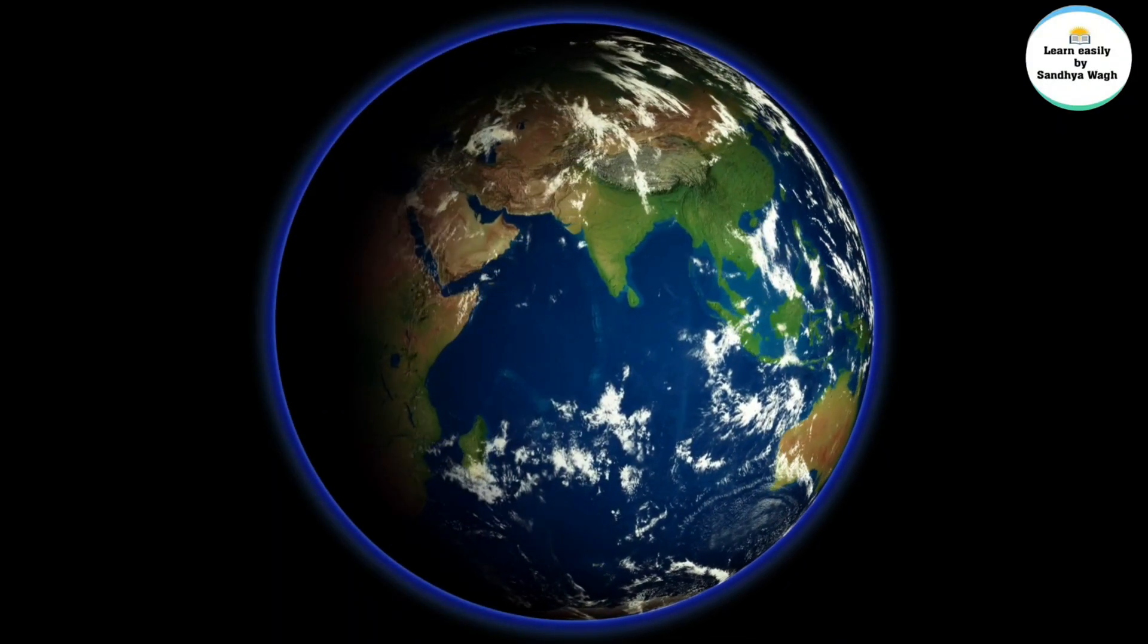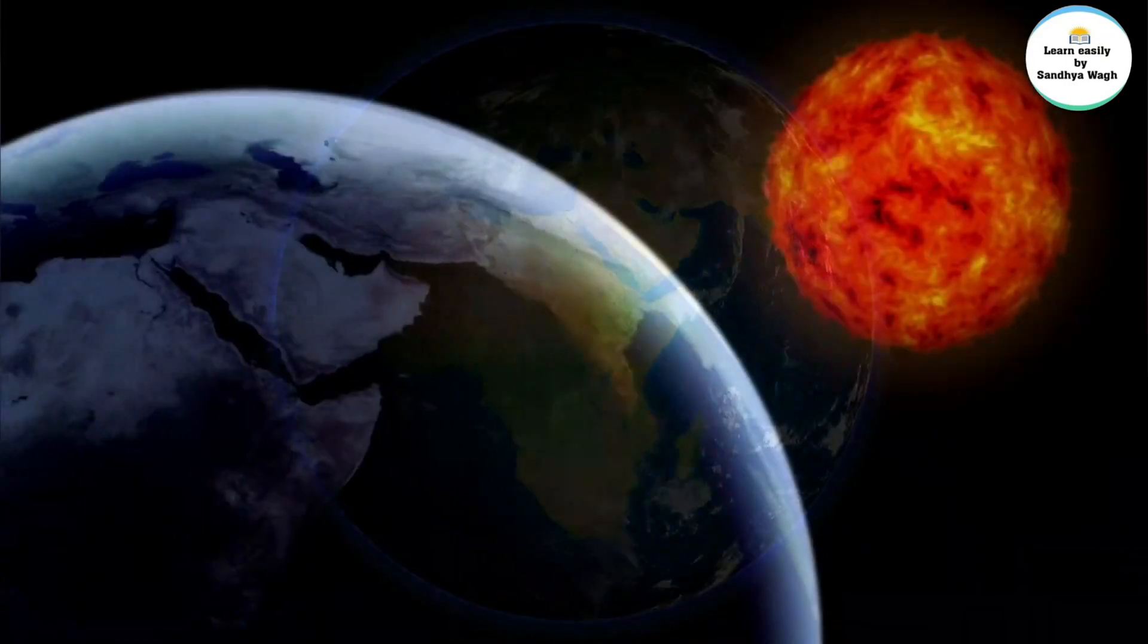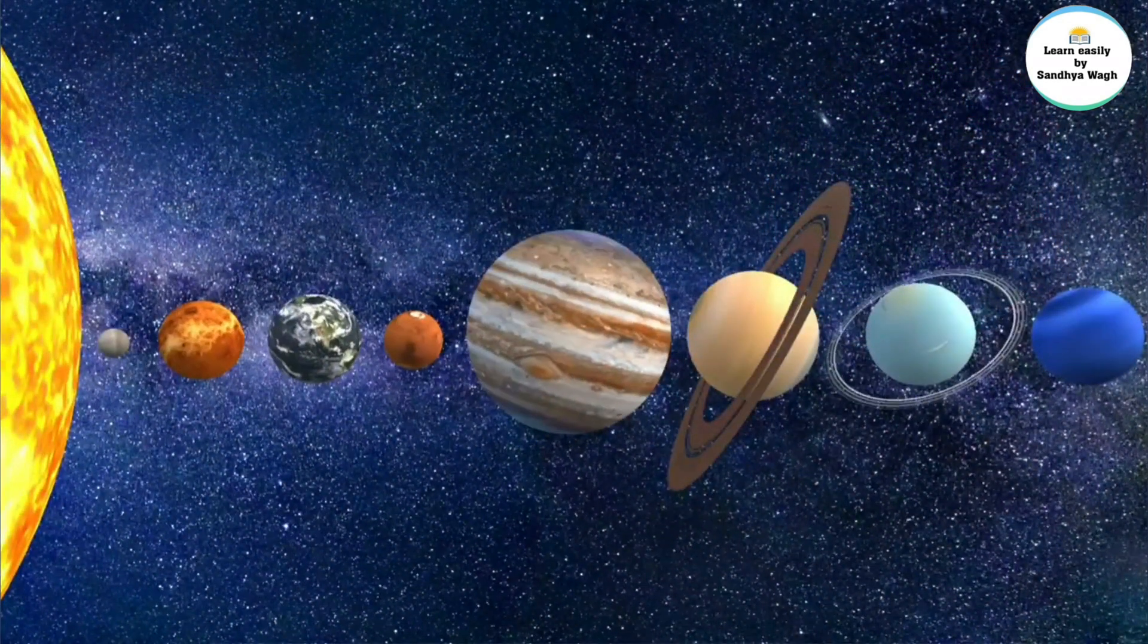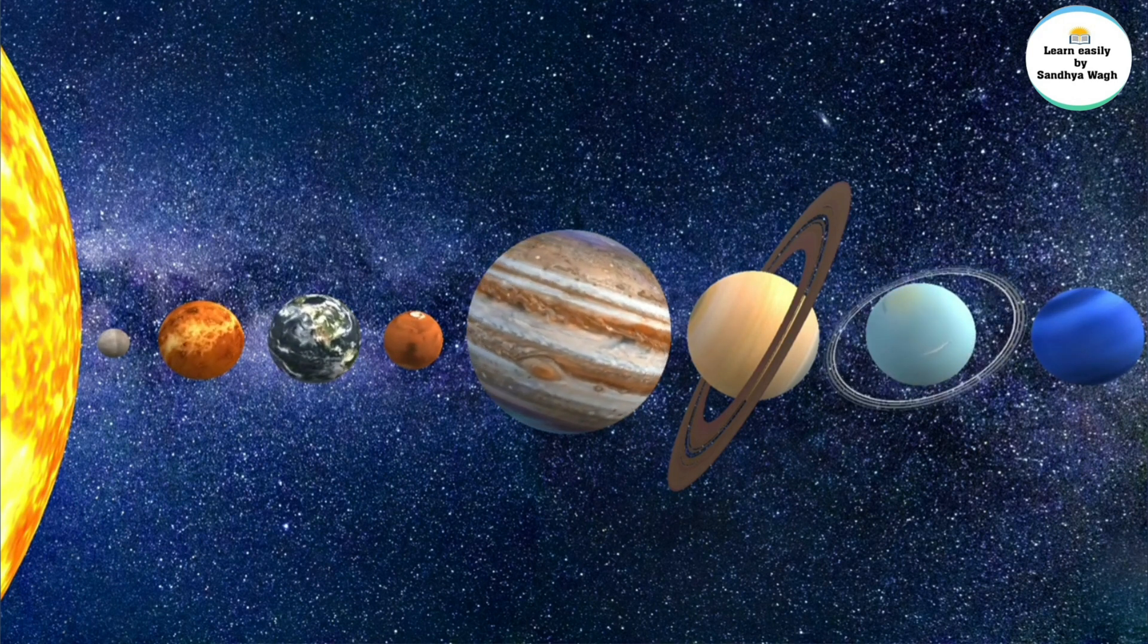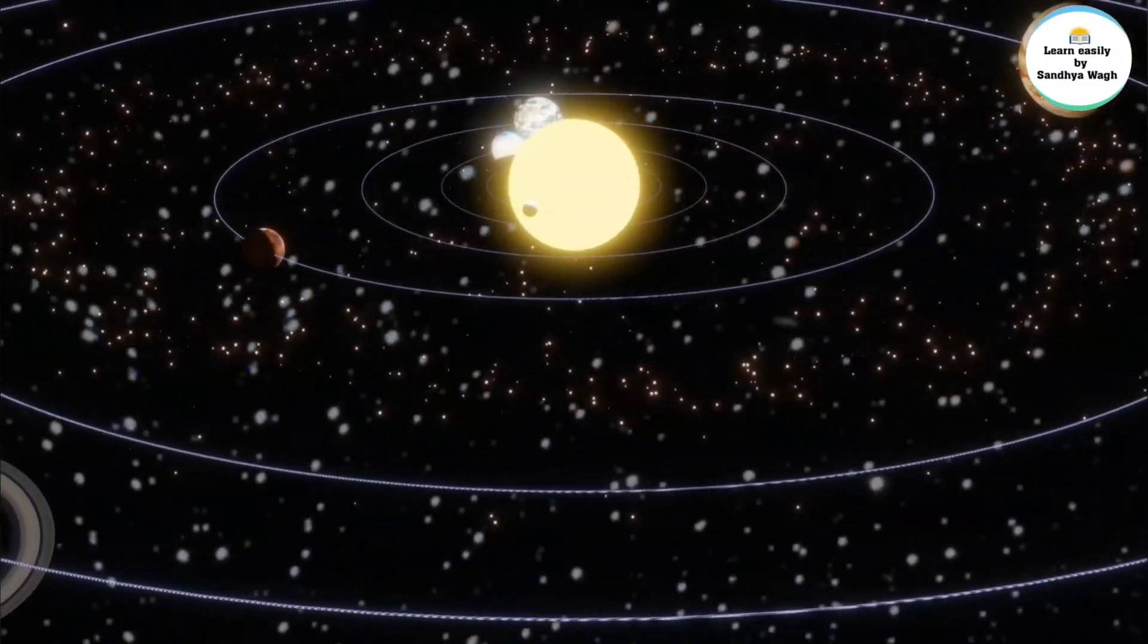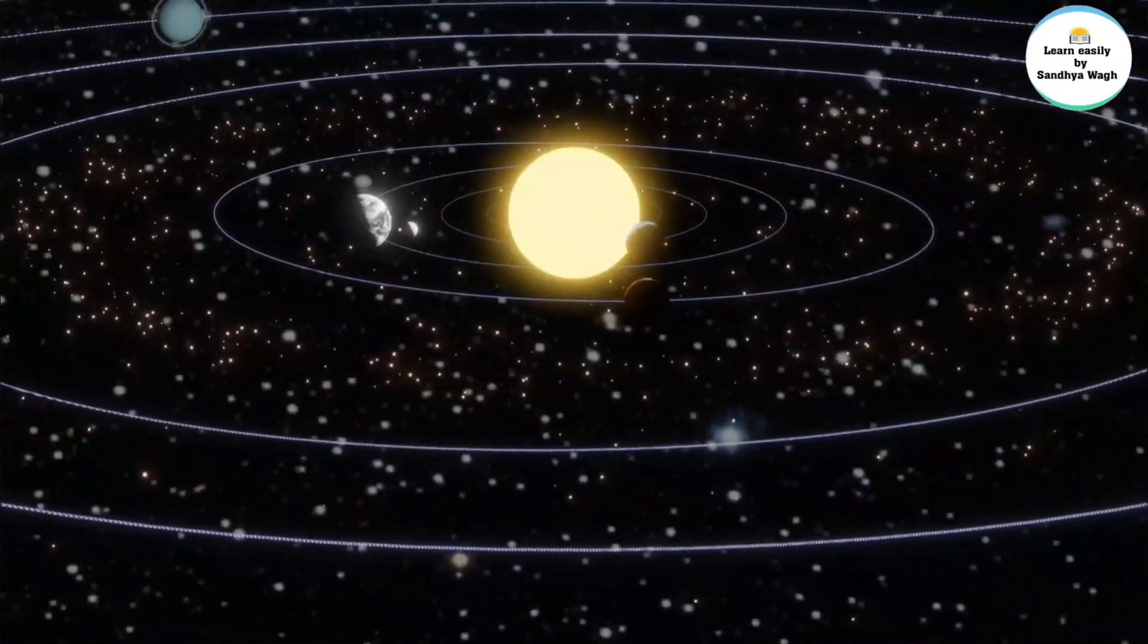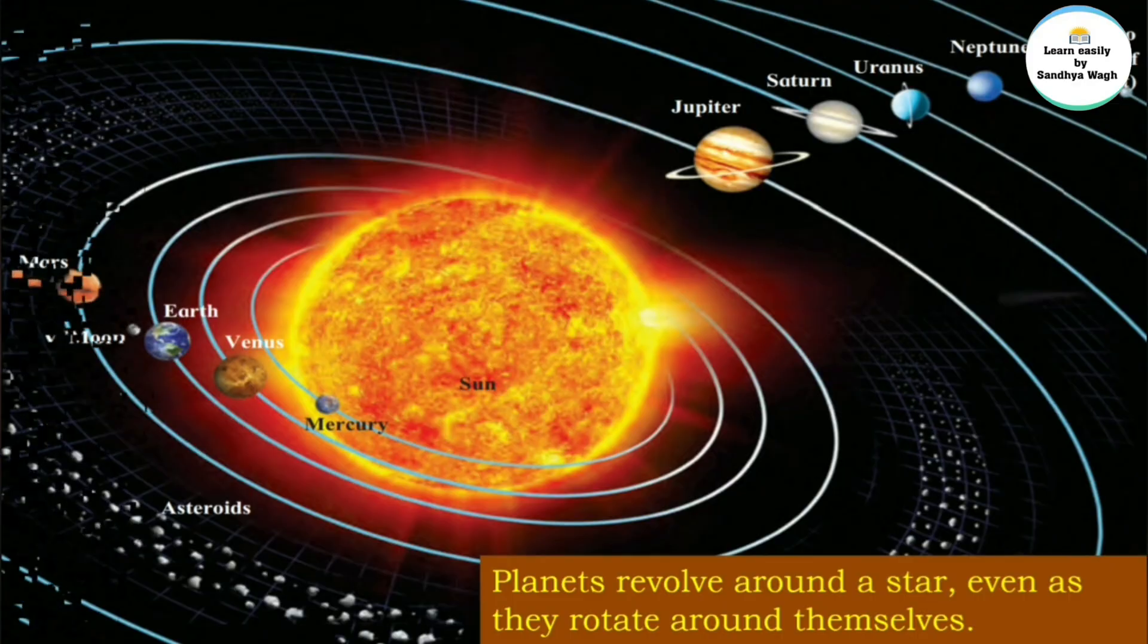Planets revolve around a star even as they rotate around themselves. Earth is a planet that revolves around the sun, which is a star. Planets do not have their own light; they get light from stars.